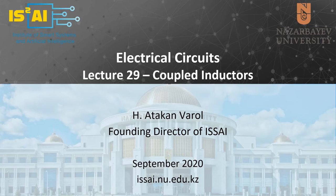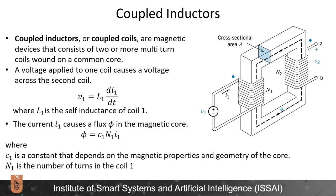In this lecture we will cover coupled inductors and mutual inductance. Coupled inductors or coupled coils are magnetic devices that consist of two or more multi-turn coils wound around a common core. For instance, here I have one coil with N1 windings and here I have another coil with N2 windings which are wound around the same magnetic core.